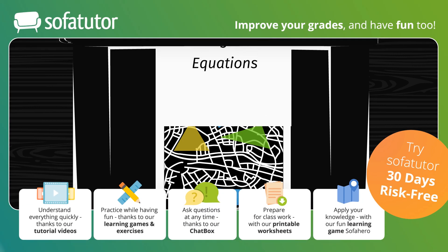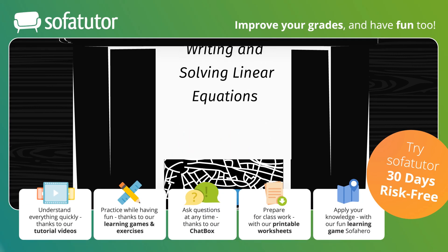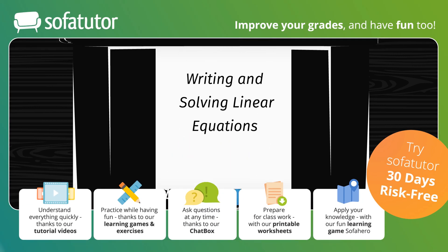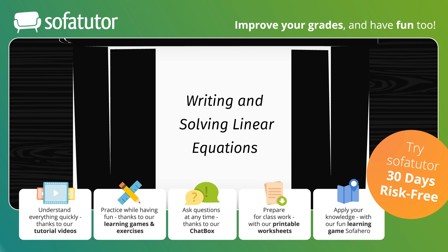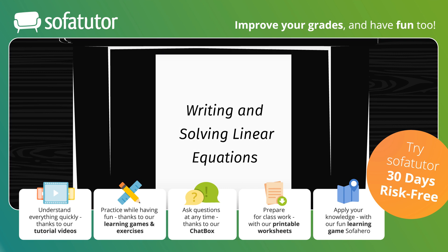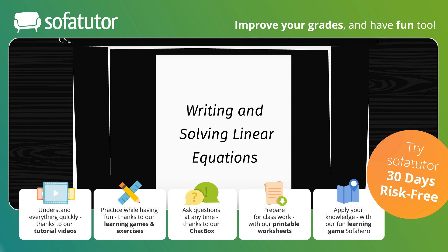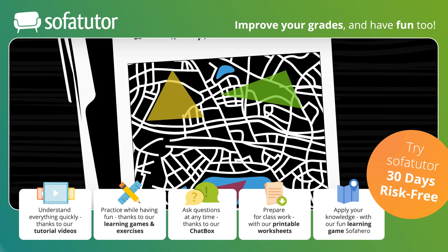Let's help Irving the Investigator solve linear equations in one variable. First, let's translate the hints into algebraic language. In each hint, there are three unknown angles, which means it's a triangle.